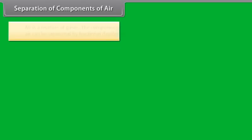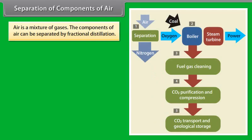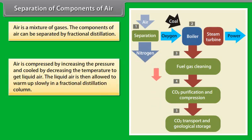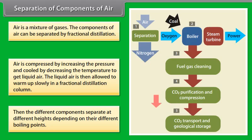Separation of components of air. Air is a mixture of gases. The components of air can be separated by fractional distillation. Air is compressed by increasing the pressure and cooled by decreasing the temperature to get liquid air. The liquid air is then allowed to warm up slowly in a fractional distillation column. Then the different components separate at different heights depending on their different boiling points.